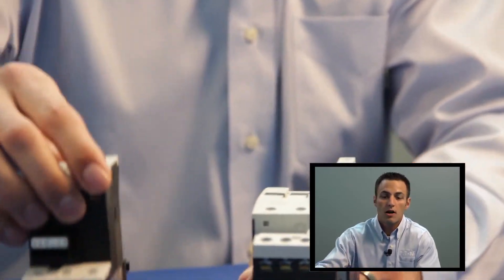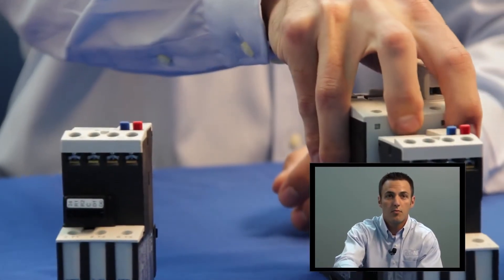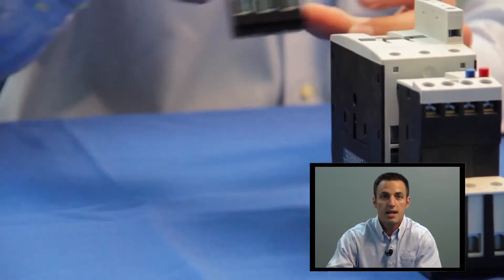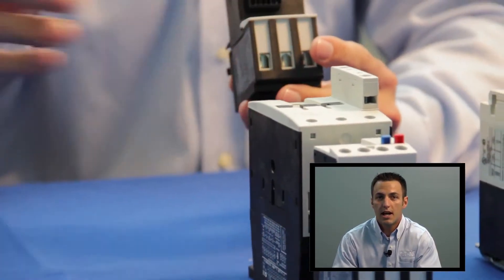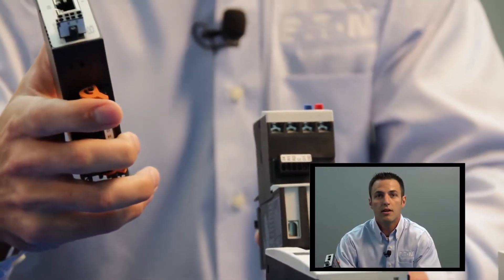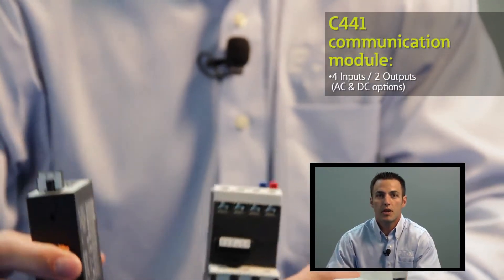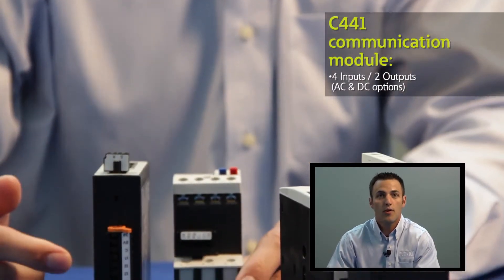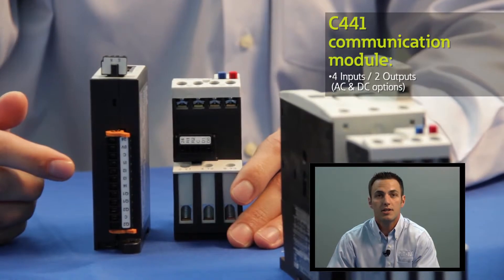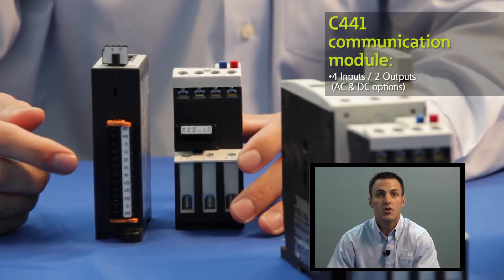For customers who also wish to not only monitor but also control the starter over communications, that same C440 XCOM can be connected to a DIN rail mounted C441 communication module. This provides the user with four inputs and two outputs in both AC and DC configurations giving them the ability to control the starter unit.